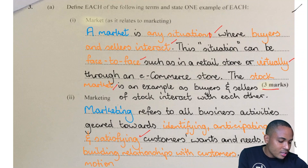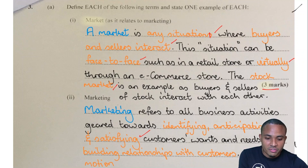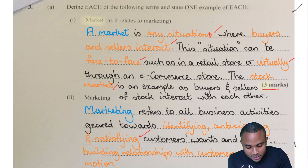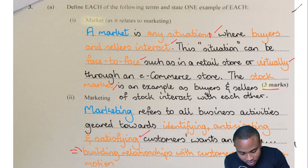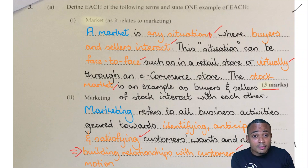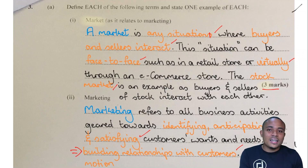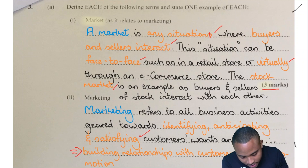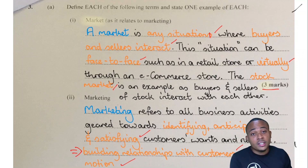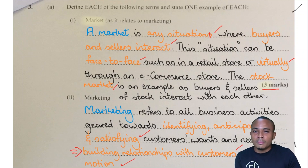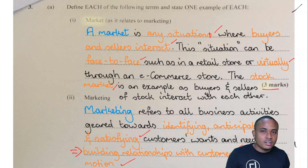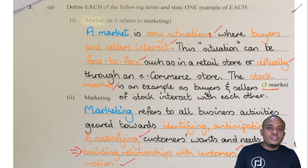Marketing also involves building relationships with customers to make a profit. That gives you the second set of marks. And for the example, an example of marketing is sales promotion — a short-term tactic done by businesses to increase sales. An example of sales promotion is coupons or buy-one-get-one-free.